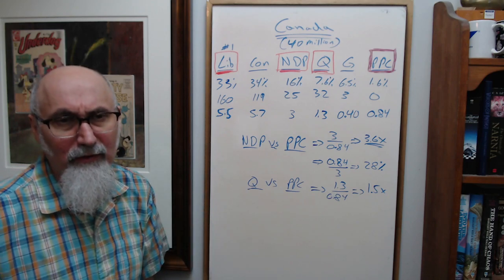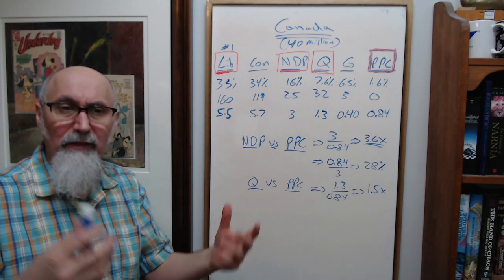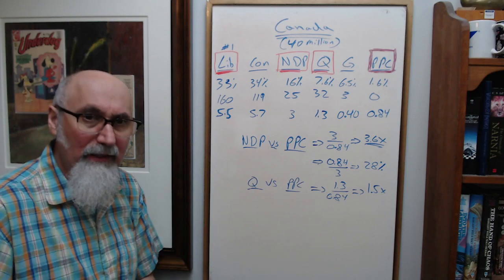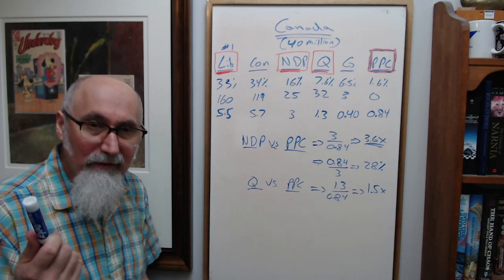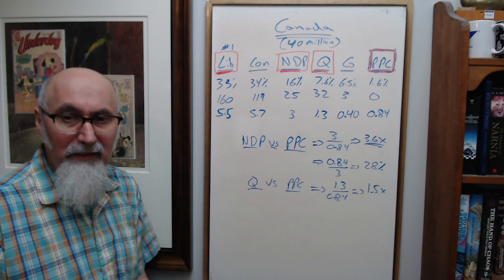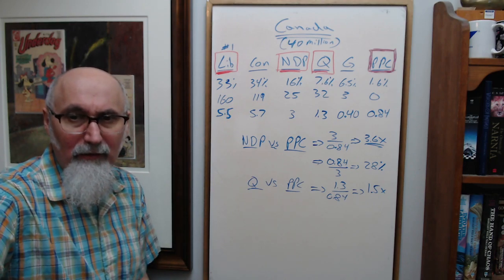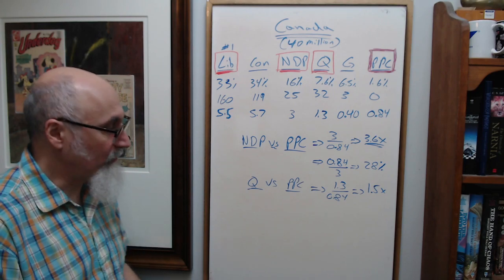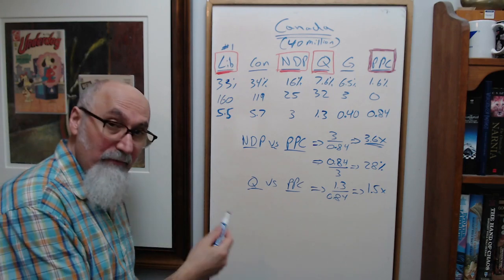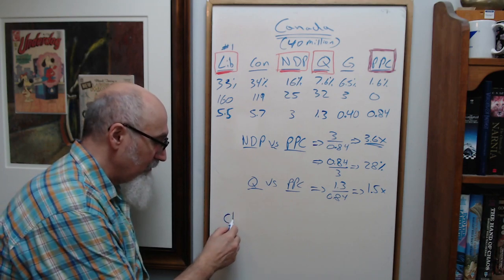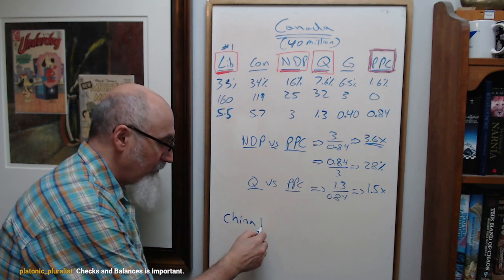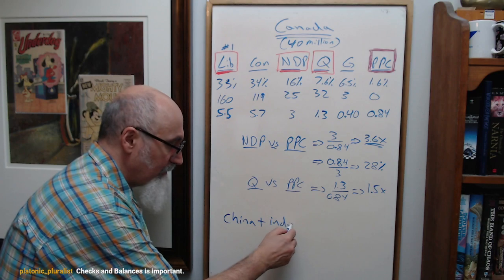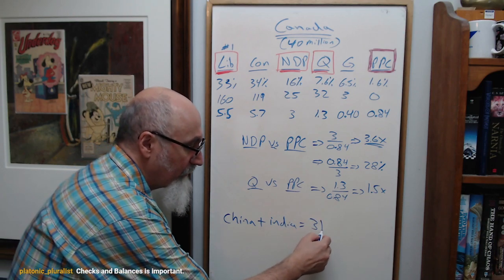Take it on a global scale. For example, right now China has, let's say, 1.5 billion people. India is getting close to 1.5 billion people. There's like 8 billion people in the world.